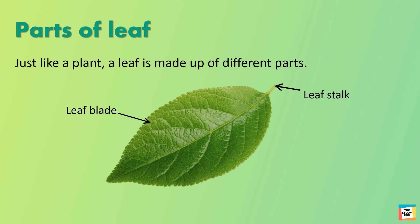Some leaves do not have leaf stalks. This is the main leaf vein and these are branch leaf veins. The veins of a leaf are made up of tiny tubes. Some of these tubes carry water from the stem to the leaf, while other tubes carry food made by the leaves to the food-carrying tubes in the stem.